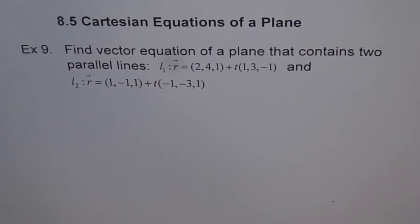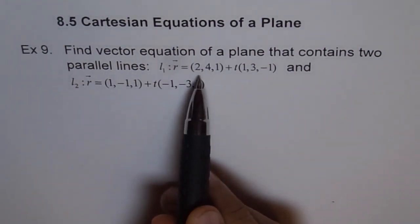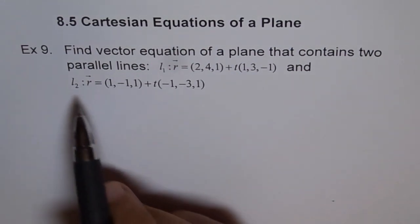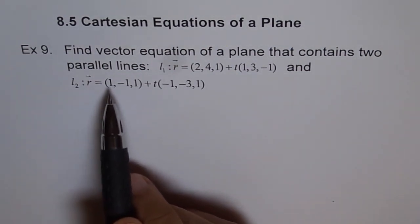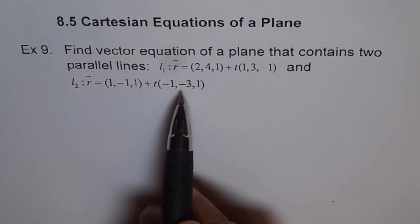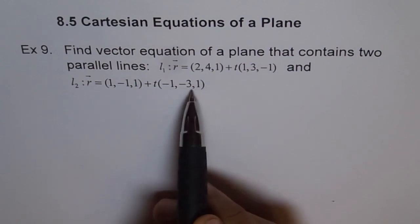Example 9. Find vector equation of a plane that contains two parallel lines. L1 as r equals 2,4,1 plus t times 1,3,-1 and L2 as r equals 1,-1,1 plus t times -1,-3,1. So you see these two lines are parallel.